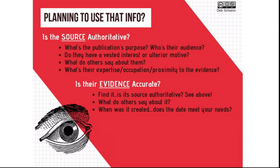Reviewing evidence is an important part of the evaluation process because the information an argument is founded on can validate or debunk the argument. Questions you should be thinking about when evaluating evidence include: Is their evidence accurate? Find it — go find the evidence and see if that source is authoritative. What do others say about it? Checking multiple sources to see if it's discussed elsewhere is a great way to check the story. When was it created? Does the date meet your needs? Historical research may require you to look to discussions from well in the past, while scientific or medical information needs are going to require more recent information.